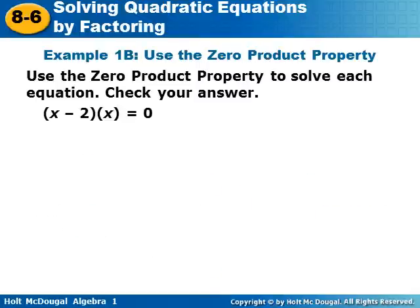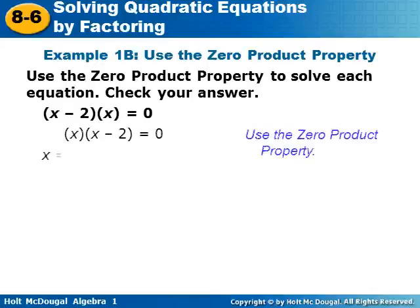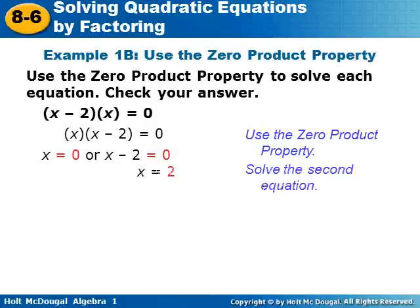Use the zero product property to solve each equation and check your answer. We have (x minus two) times x equals zero. So either x minus two equals zero or just x equals zero. We solve both and get x equals zero or x equals two.